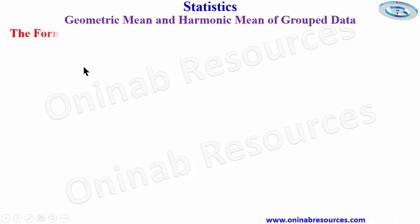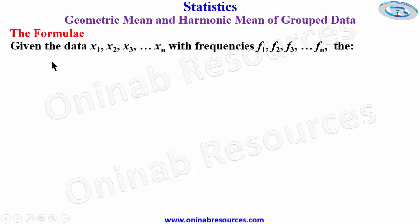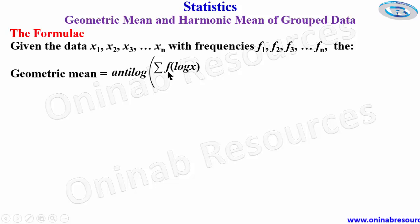So first we look at the formulae. Given the data x1, x2, x3 up till xn with frequencies f1, f2, f3 up till fn, the geometric mean is given as antilog of summation of f times logarithm of x over the summation of f.